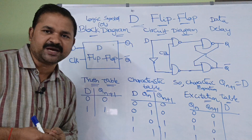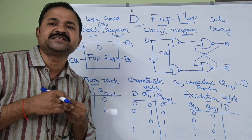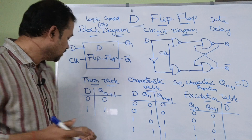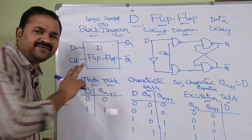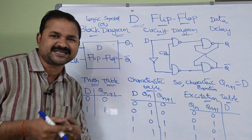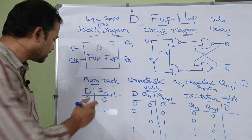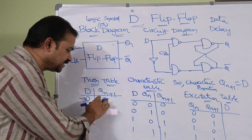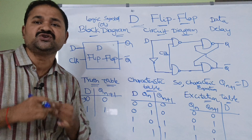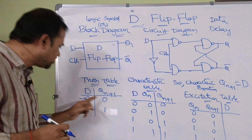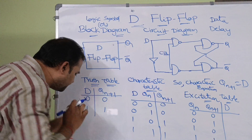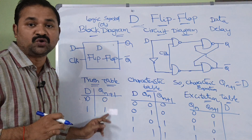Now let us see the truth table. In the D flip-flop, D stands for data, and it is useful for storing data. We have only one input, D, and the output is Q(N+1), the next state output. If the input D is 0 then the output is 0, and if the input D is 1 then the output is also 1.